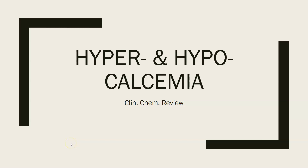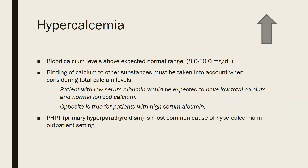Hi, this is Dr. A with a clinical chemistry review video. We're going to look at hyper- and hypocalcemia. Hypercalcemia is a blood calcium level above the expected normal range. A normal range could be 8.6 to 10.0 milligrams per deciliter — refer to your lab report's reference range.